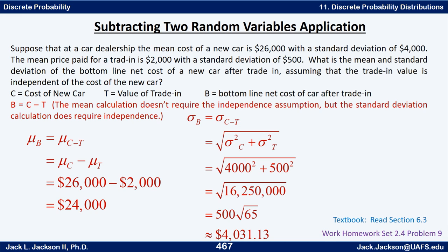That shows how we can get new random variables from old ones and how that affects the key parameters we're working with.